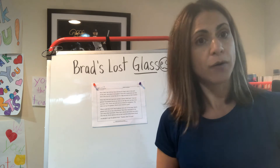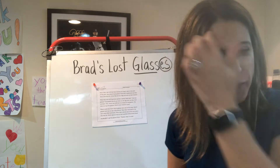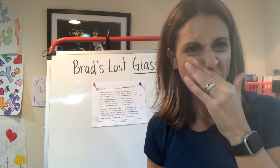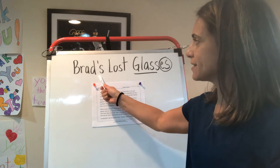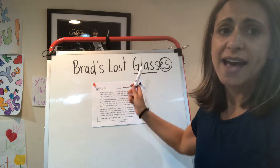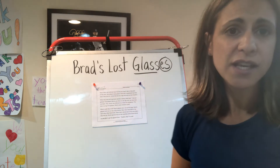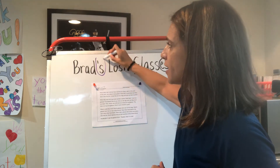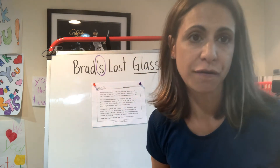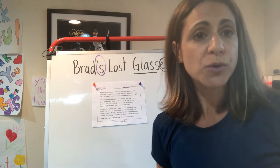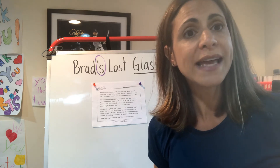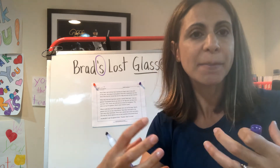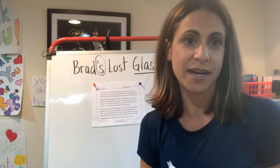Before I begin, I just want to point out — and we did mention this before — in the title Brad's Lost Glasses, you see this punctuation. Now some of you might think it's a comma; it's not a comma. It is an apostrophe. We use an apostrophe S to show possession — that means when something belongs to somebody, or somebody owns something.